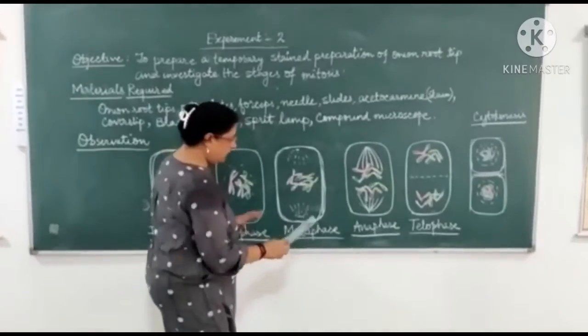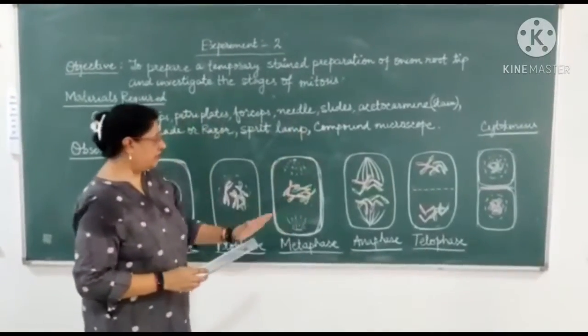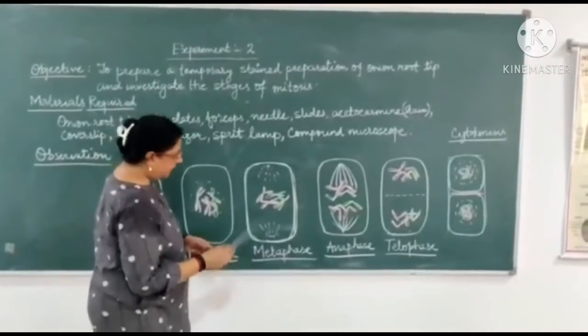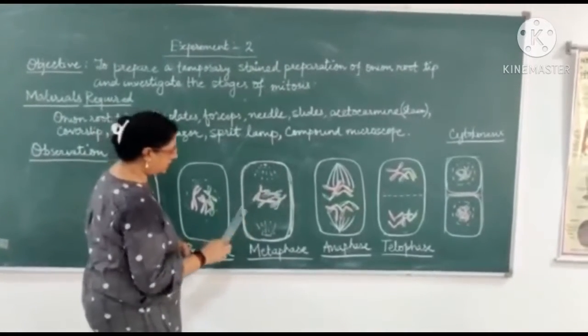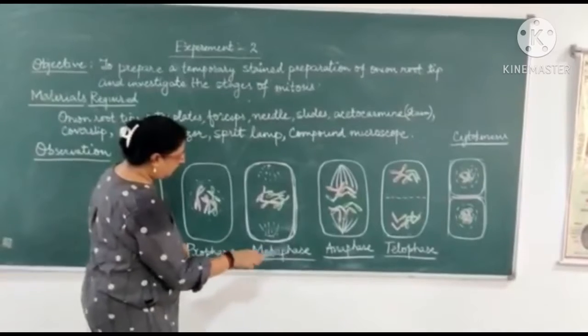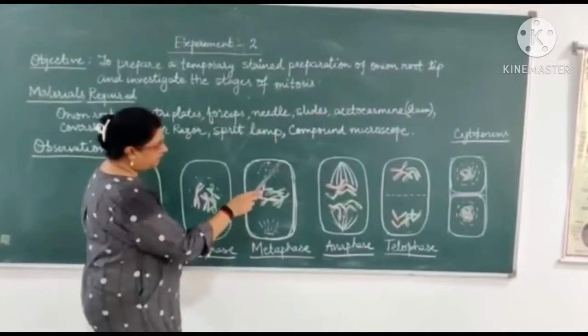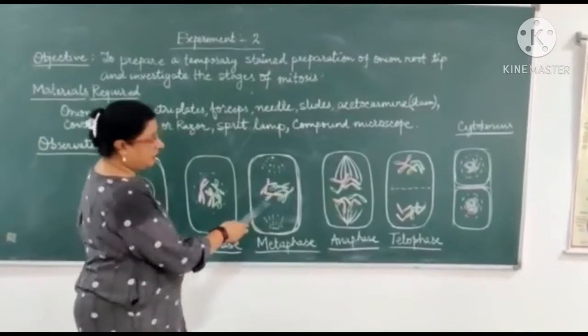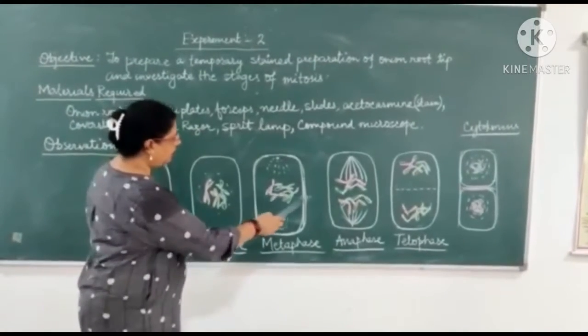Next stage is metaphase. There is no gap in the divisions. The division continues, but for our sake, we study it in different phases. Metaphase, in which the spindle fiber formation starts from the two opposite poles and the chromosomes are aligned in the center position, that is the equatorial position.